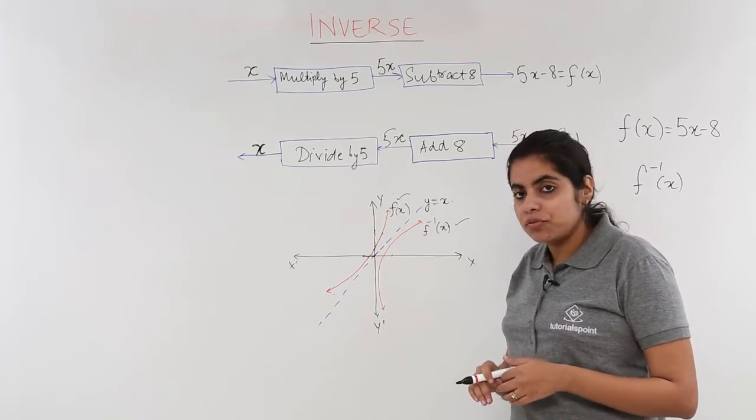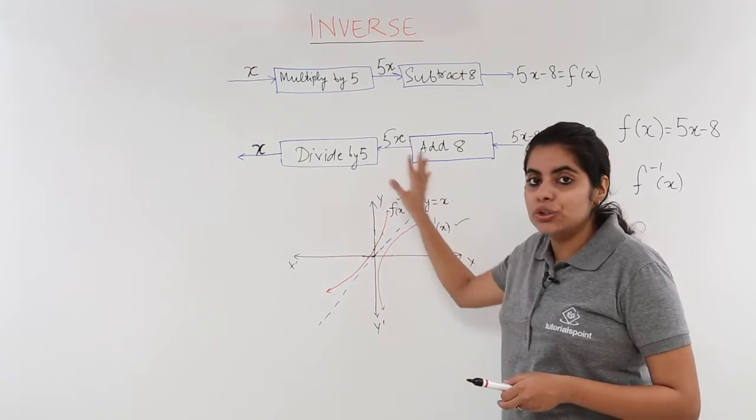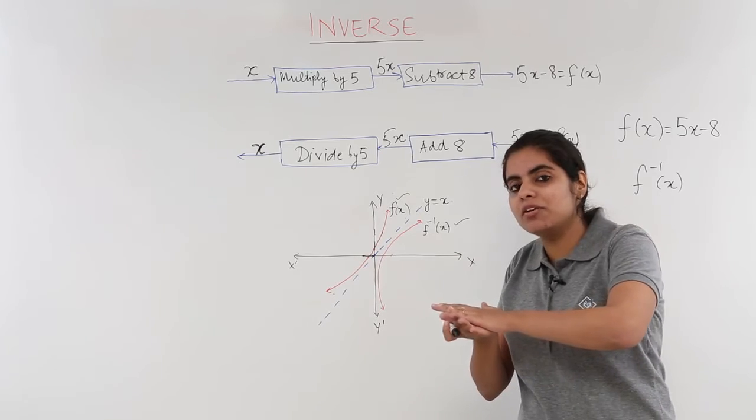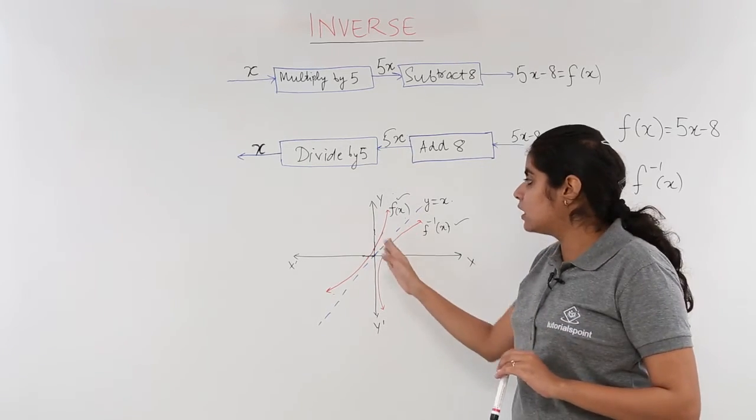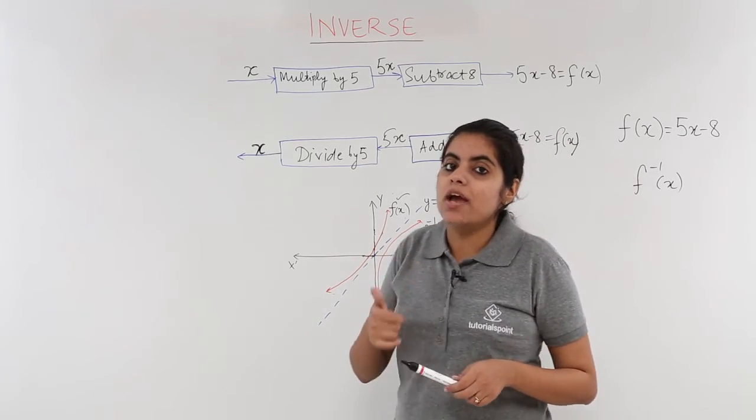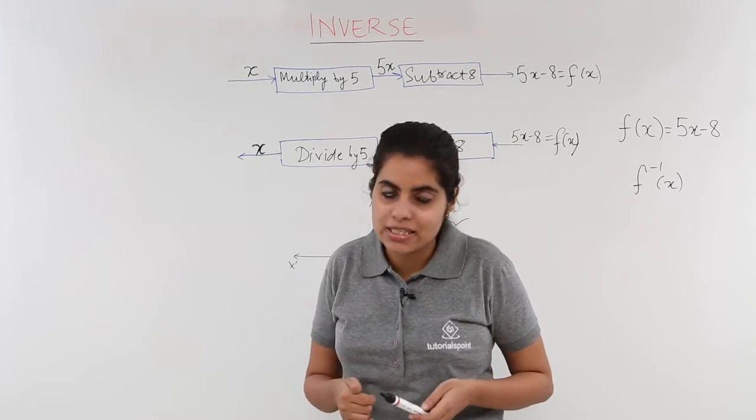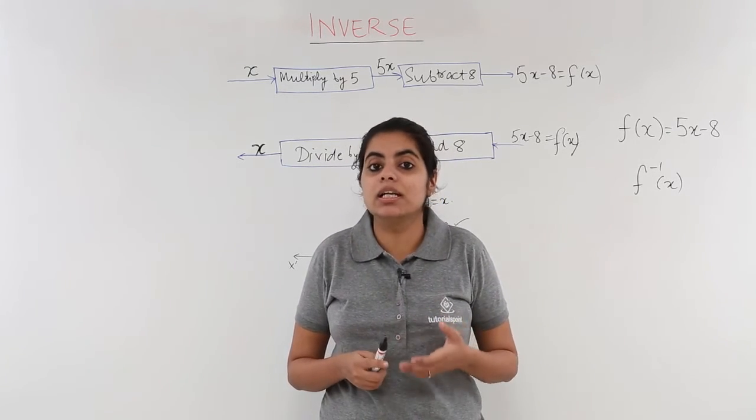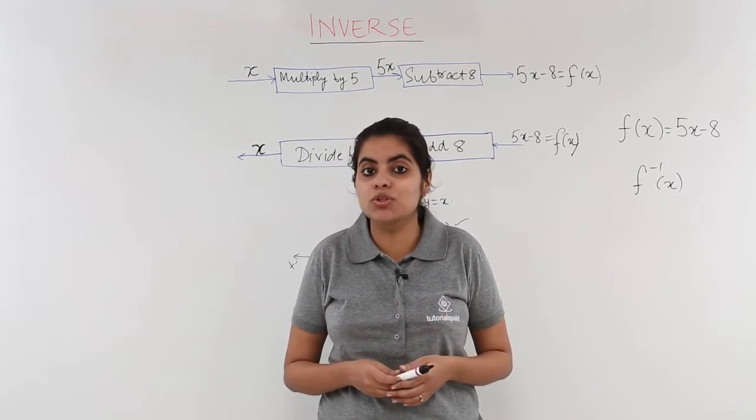That means if this graph is not drawn on a board rather on a paper and you fold the paper about the line y = x, the curves will overlap. That means two functions f(x) and f inverse x are the reflections or images of each other about the line y = x.